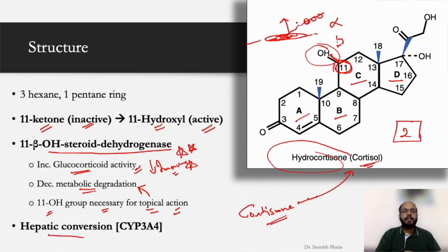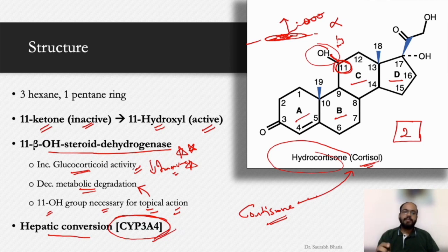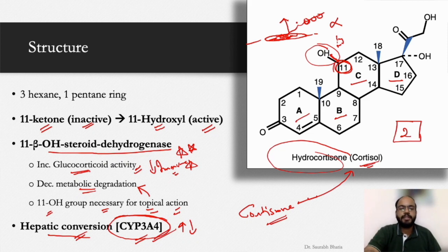This conversion happens in the liver via the CYP3A4 enzyme, one of the cytochrome P450 group of enzymes. Whoever is inducing or inhibiting CYP3A4 has an effect on steroid metabolism. Additionally, long-standing liver disease can lead to decreased conversion or decreased metabolism of steroid molecules, leading to further adverse effects — one more important point to keep in mind.